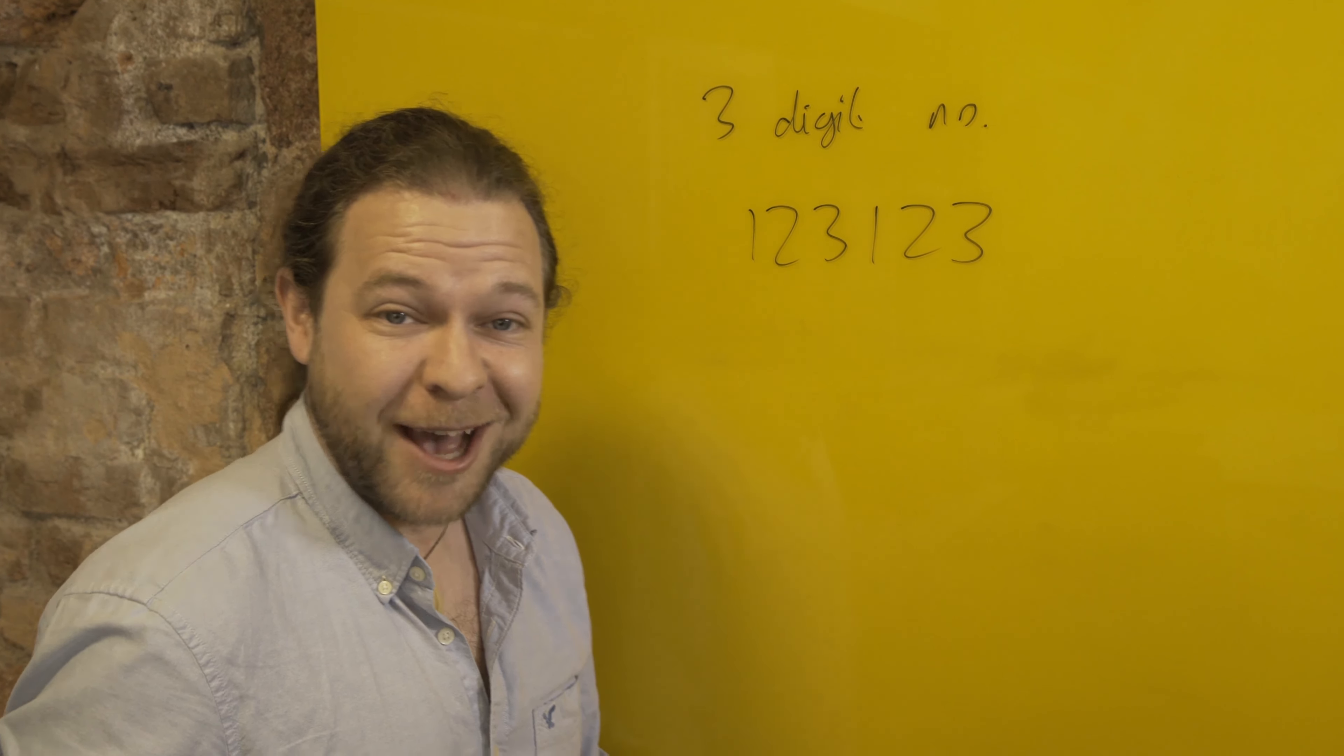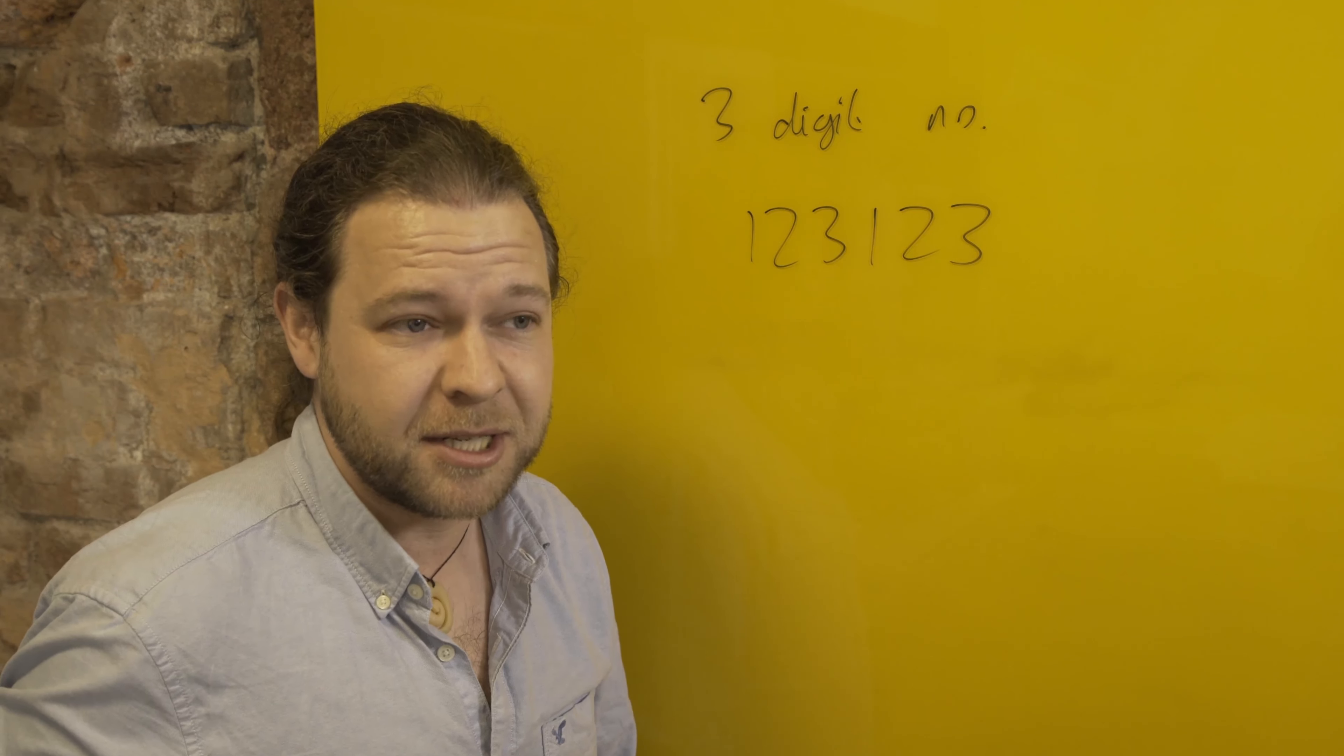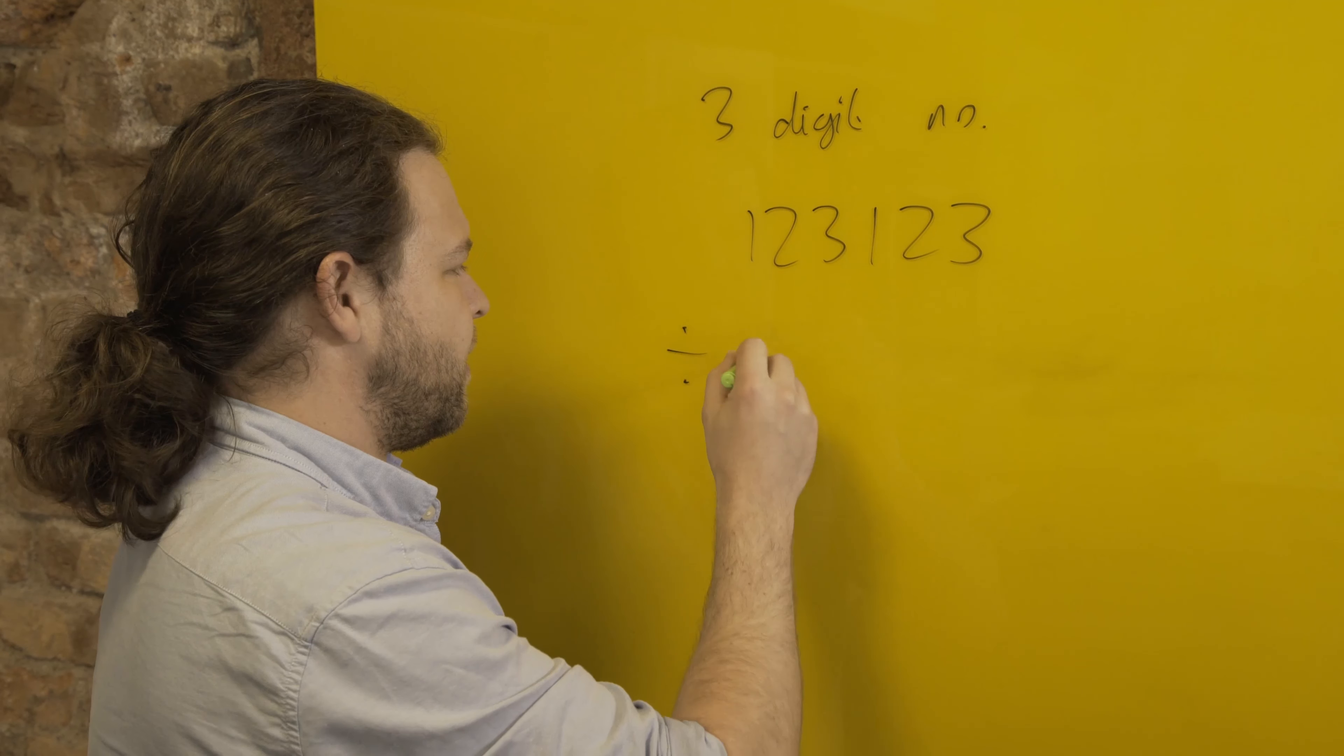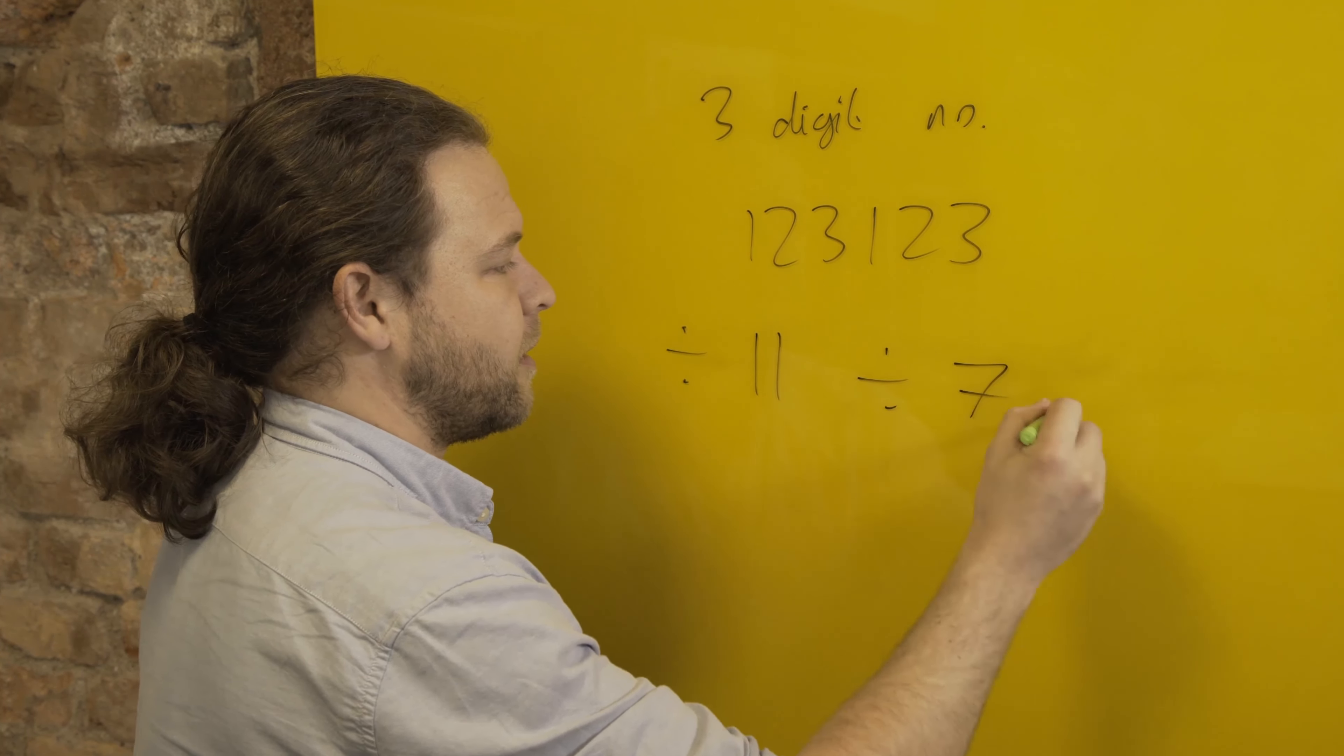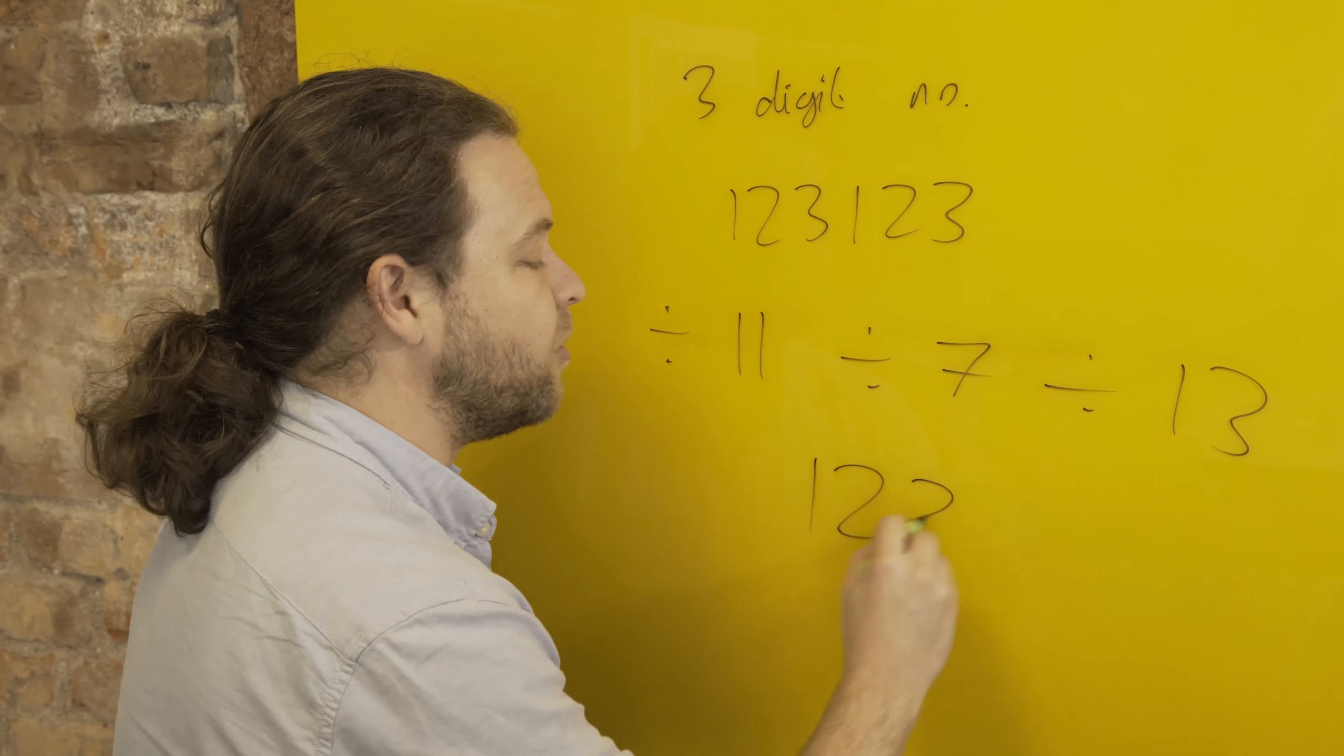So if you just tried what I asked you to try, you had a random six-digit number, probably not this one I hope. And I asked you to divide it by three digits: they were in fact 11, and then 7, and then 13. And if you did it right, well, interestingly what you found is you ended up with whatever you started with.